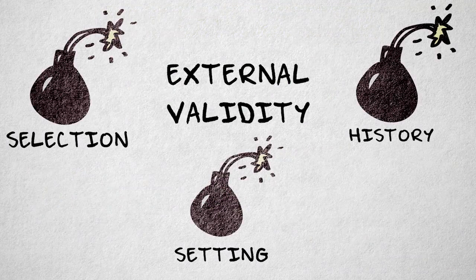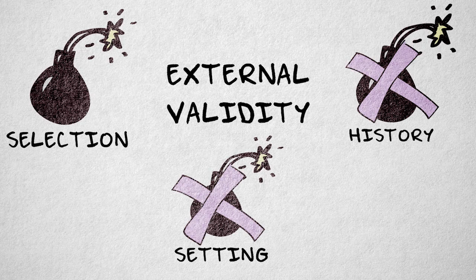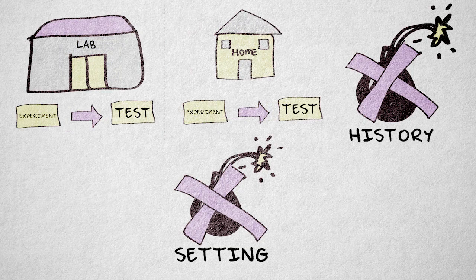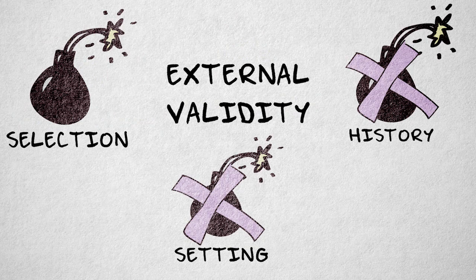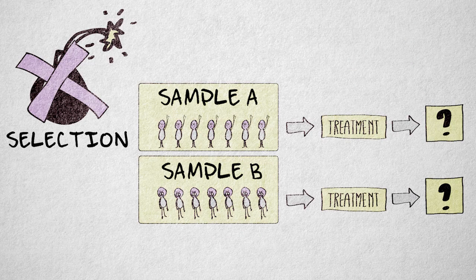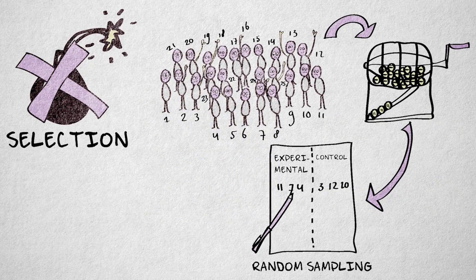What can we do about these threats to external validity? History and setting threats can be reduced by replicating a study in a different time or by repeating a study in different settings. In the case of threats related to the artificiality of the research setting specifically, this means repeating a study in a more natural environment. Replication can also reduce the threat of selection, in this case by repeating a study with different groups of subjects. Another way to reduce the threat of selection is random sampling of the research sample, also referred to as probability sampling.